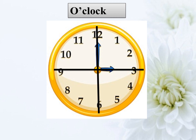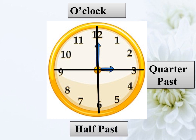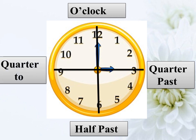The next one: when the long hand points at 3, it means that it is quarter past. Whenever the long hand points at 6, it means that it is half past. Similarly, whenever the long hand points at 9, it means that it is quarter to.